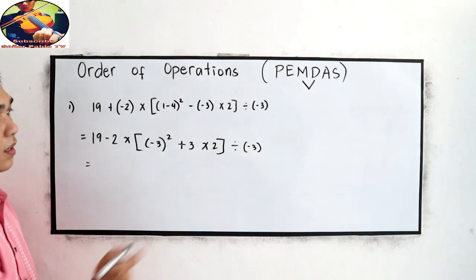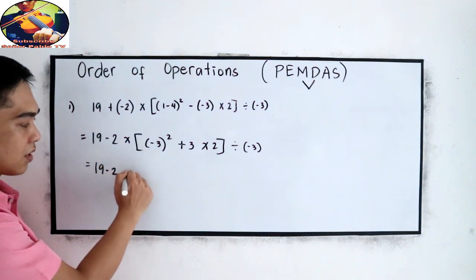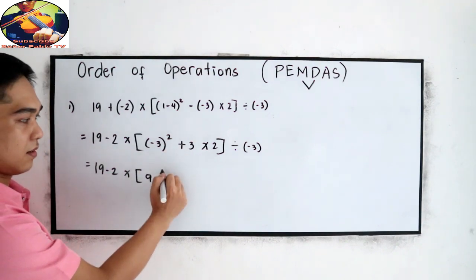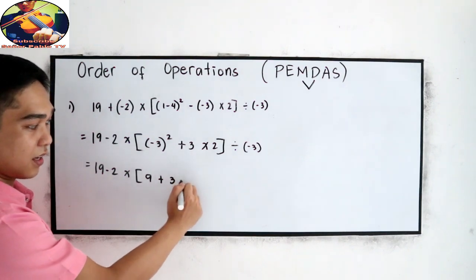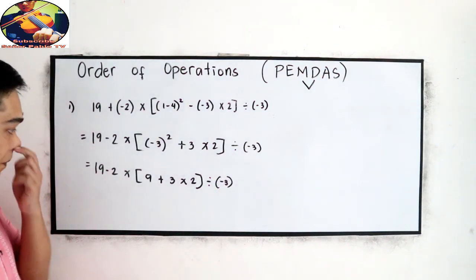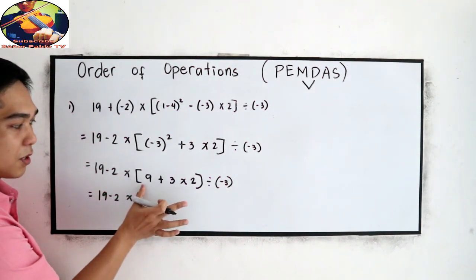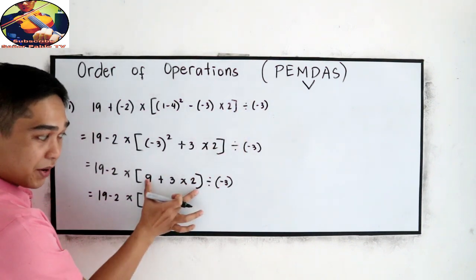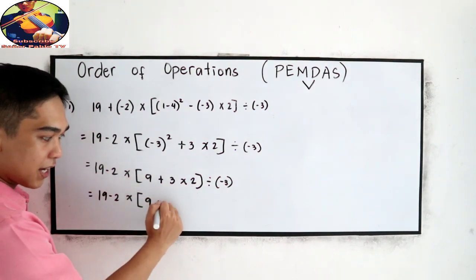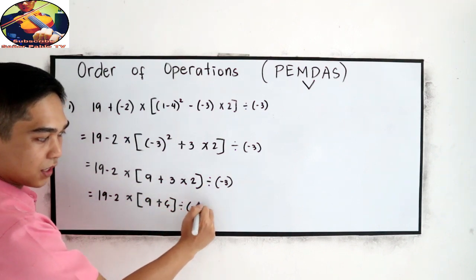Next, simplify the exponent in our parenthesis. Copy 19 minus 2 times negative 3 squared — that is positive 9 — plus 3 times 2 divided by negative 3. According to PEMDAS, inside the parenthesis we multiply 3 times 2 first before adding to 9. So copy 9, and 3 times 2 is 6, divided by negative 3.